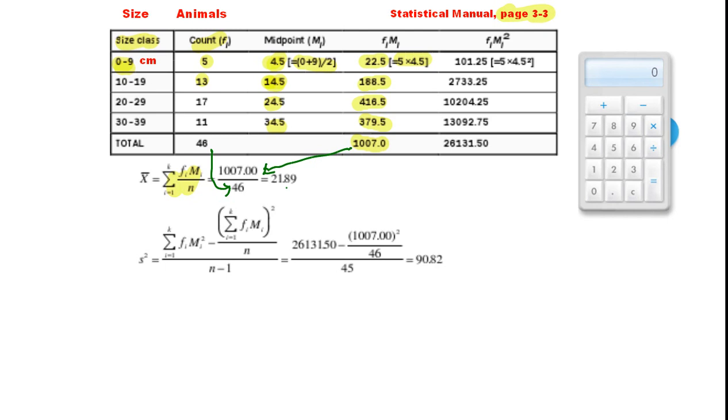Now to work out the variance, we're actually going to use some of those results. You can see that that part gets copied in down here, except that the part on top is squared. So that last part there, here is 1,007 squared divided by 46.